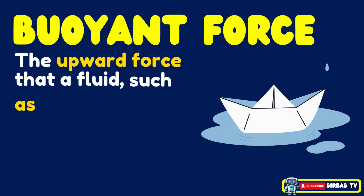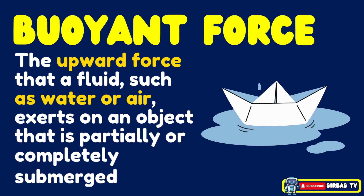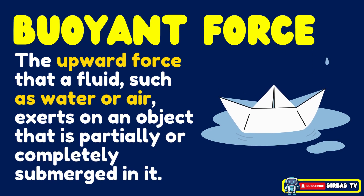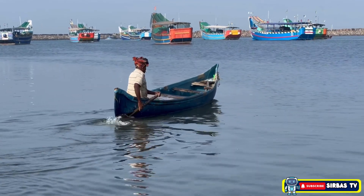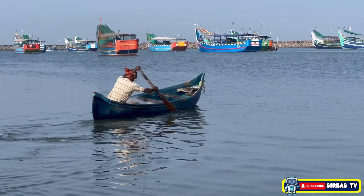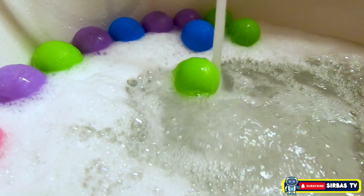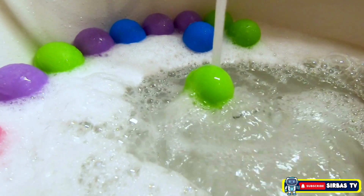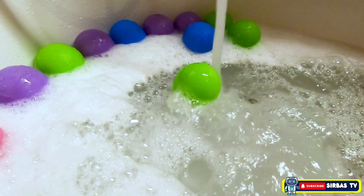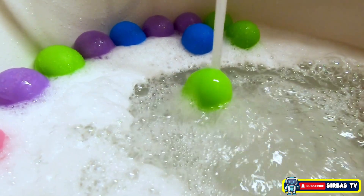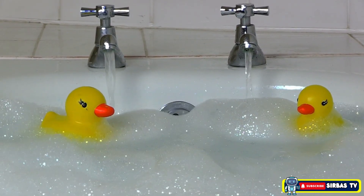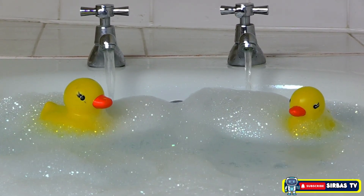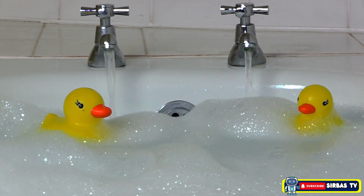Buoyant force is the upward force that a fluid, such as water or air, exerts on an object that is partially or completely submerged in it. It is the reason why some objects float while others sink. When you drop a plastic ball in water, it floats. Another example is placing a rubber toy in water — it stays on the surface because the buoyant force pushes it upward.